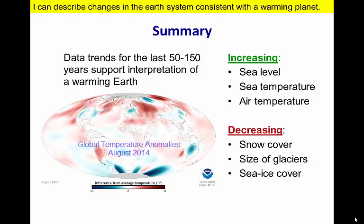August 2014 was the world's hottest August since record keeping began in 1880. Data suggests that this pattern will be repeated in future years. While there may be cooler years or regions, the general trends are for higher temperatures and sea levels, and for less snow and ice.